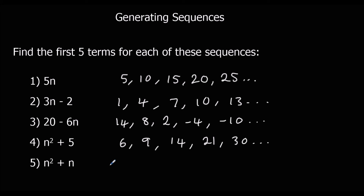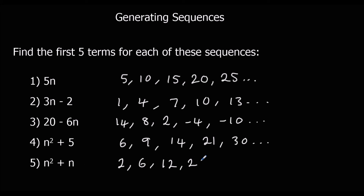For n squared plus n: 1 squared plus 1 is 2. 2 squared plus 2: 4 plus 2 is 6. 3 squared plus 3: 9 plus 3 is 12. 4 squared plus 4: 16 plus 4 is 20. And 5 squared plus 5 is 30.